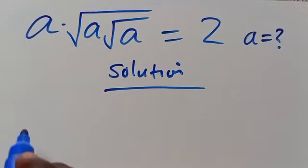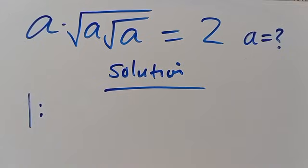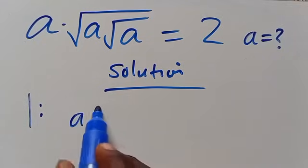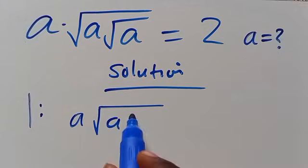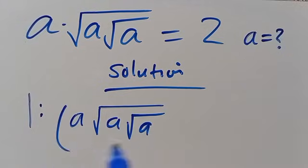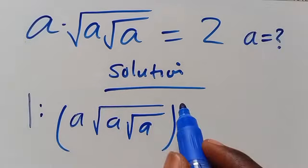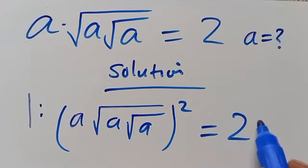Let's see Method 1. From here, let's take the square of both sides: A multiplied by root of A into root of A, in parentheses, to the power of 2, equals 2 to the power of 2.